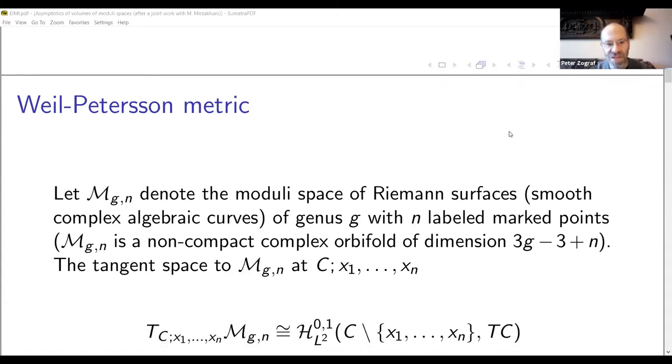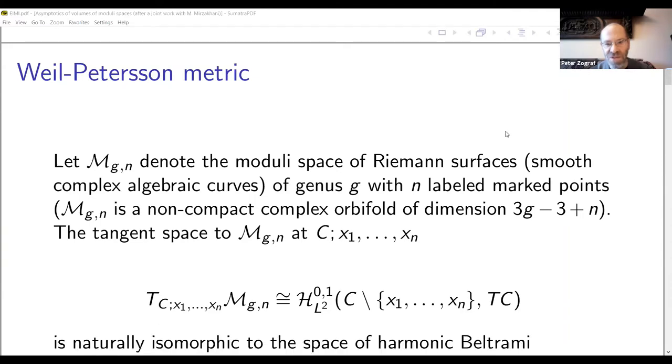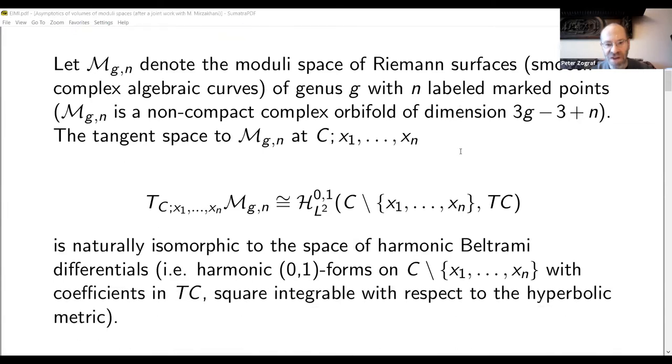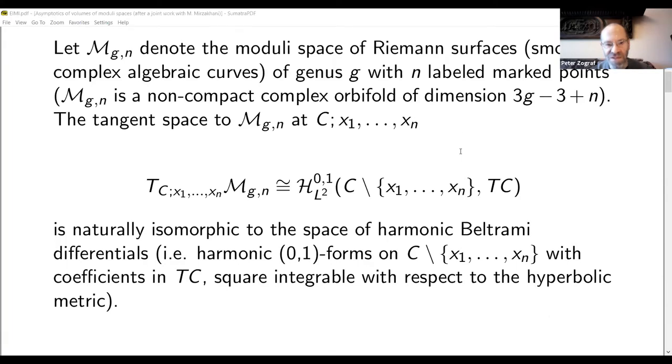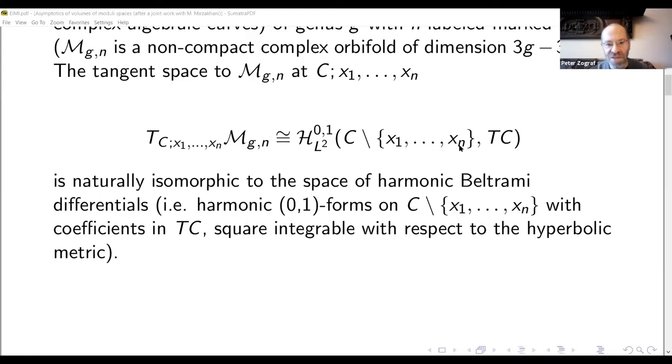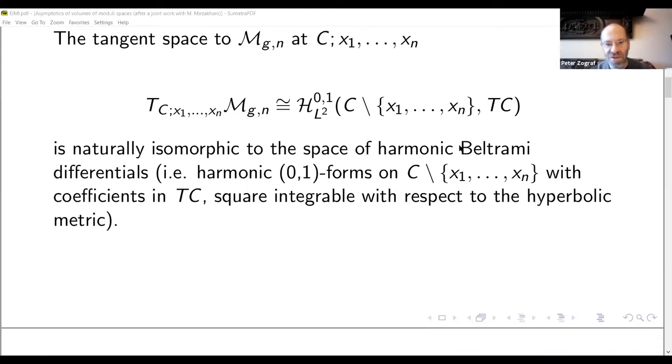Denoted by M_{g,n}, the modular space of Riemann surfaces, which is the same as smooth complex algebraic curves of genus g with n labeled marked points. The tangent space to the modular space at the point represented by a curve C with marked points x_1 to x_n can be naturally identified with the space of harmonic Beltrami differentials. What is a harmonic Beltrami differential? That's a harmonic (0,1)-form on the punctured surface, the punctured curve, with coefficients in the holomorphic tangent bundle to the curve, that is square integrable with respect to the hyperbolic metric on the punctured curve.